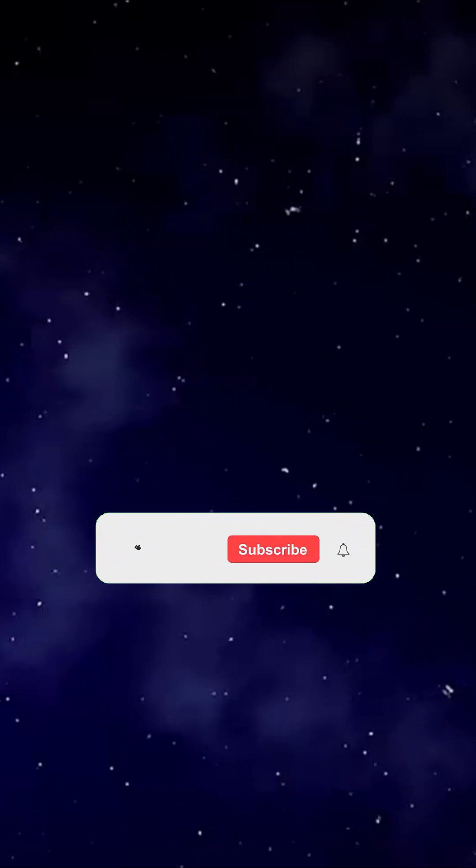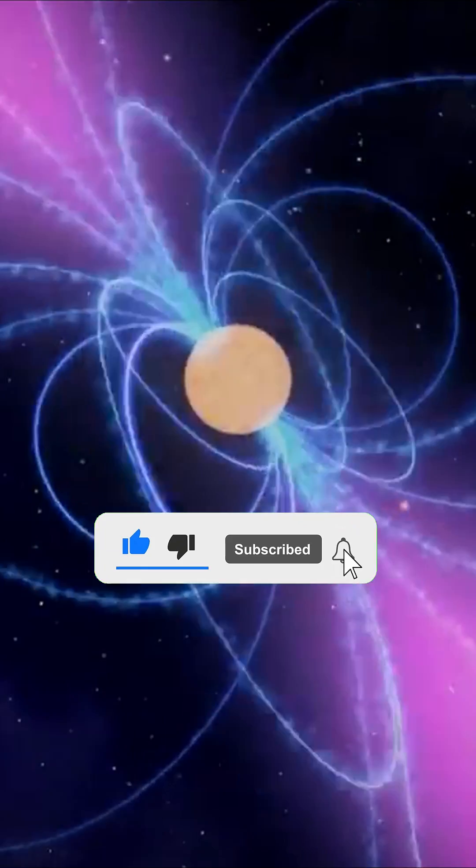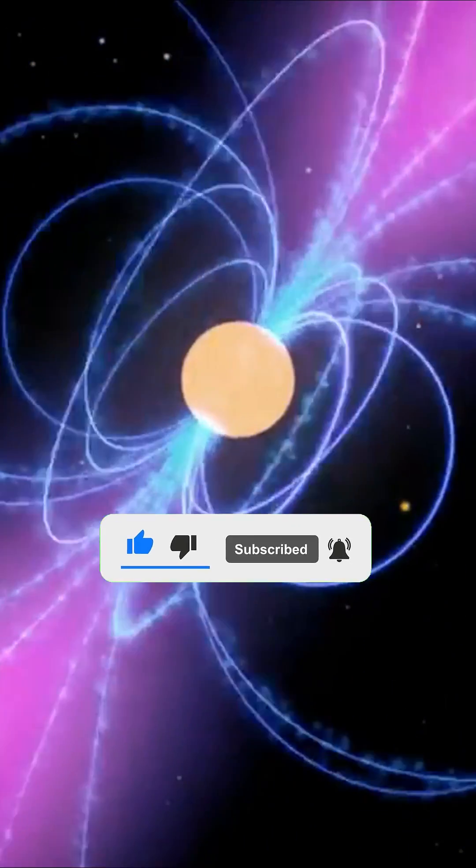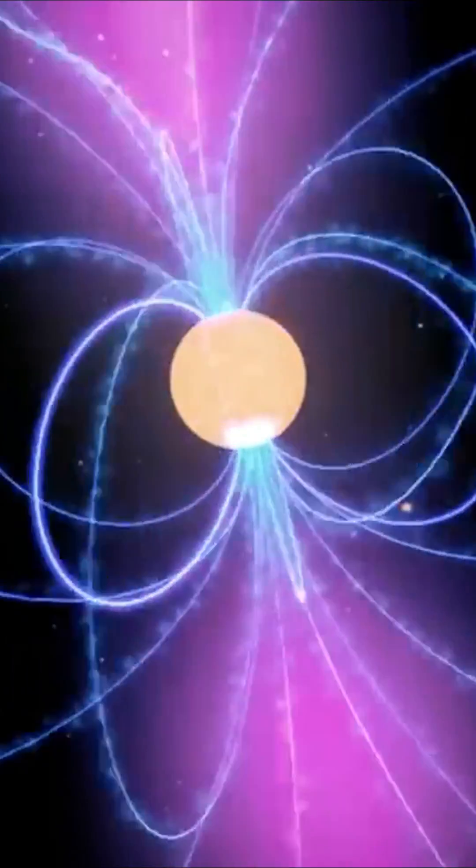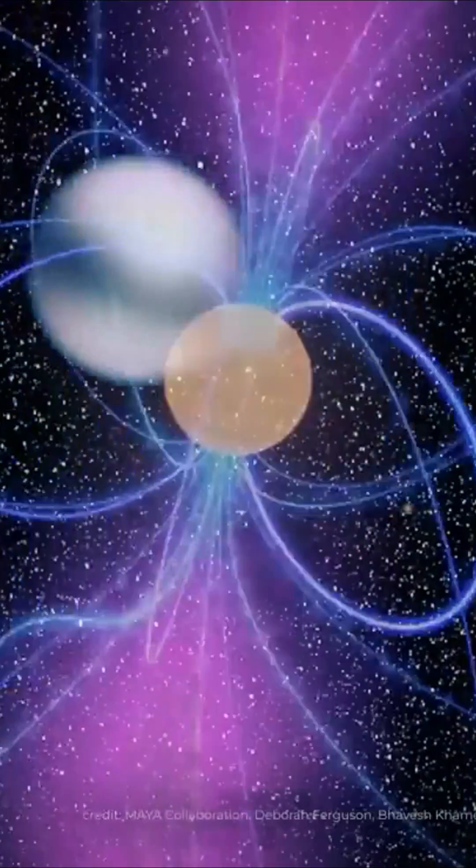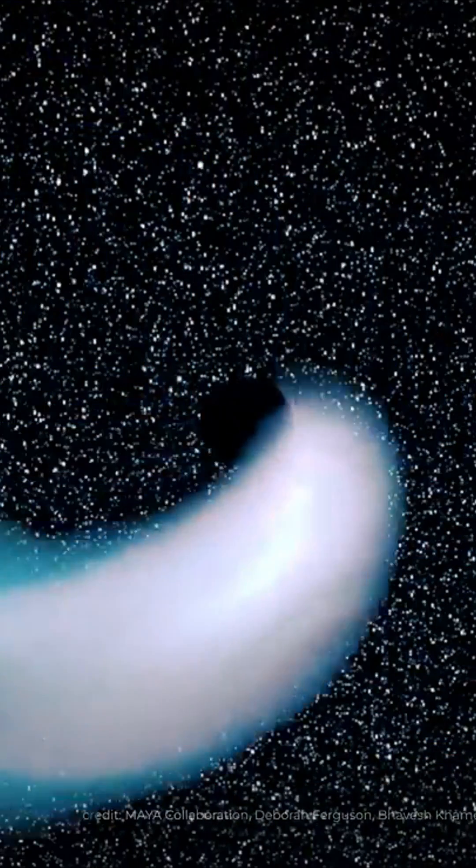Long before the first neutron star was observed, the idea of the potential existence of this type of star was put forward in the early 1930s by Soviet physicist Lev Landau. This hypothesis came just after the major discovery of the neutron in 1932 by British physicist James Chadwick.